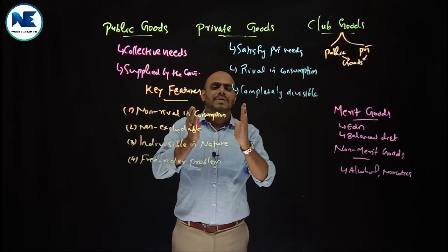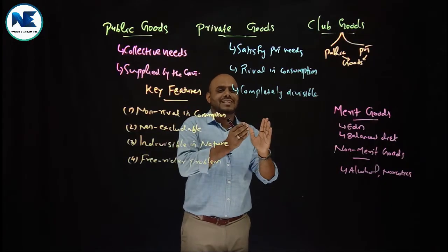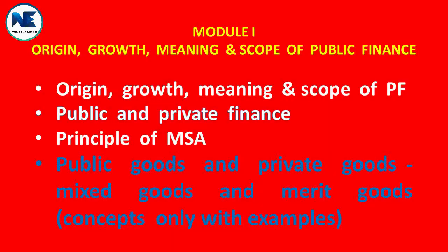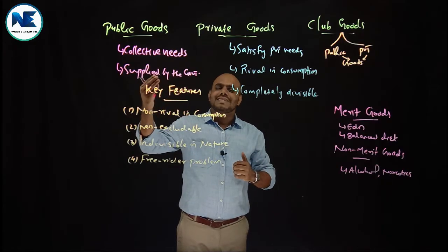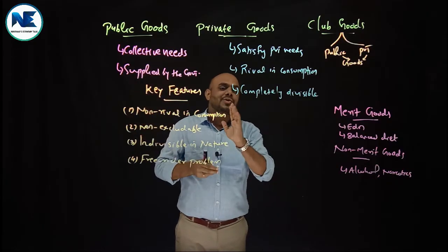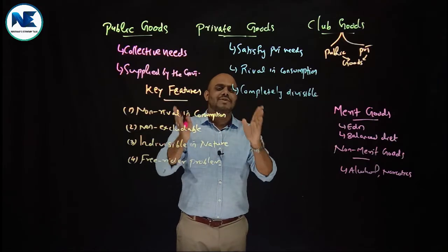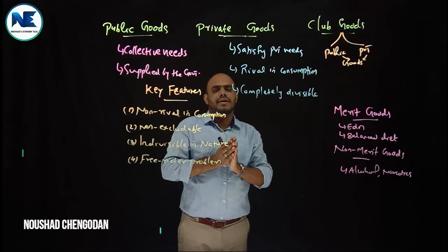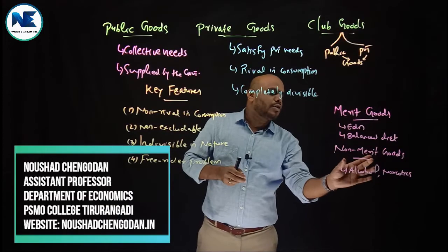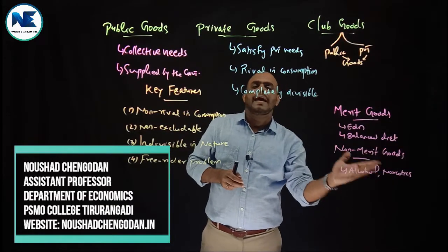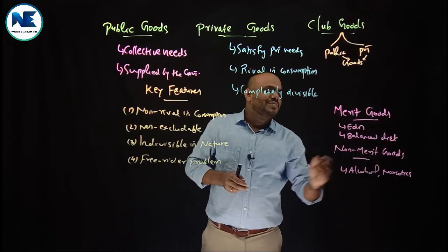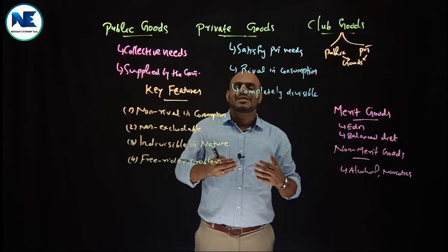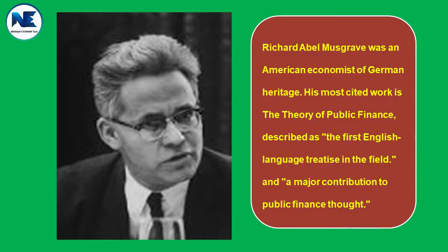We have specific concepts only; detailed discussions are expected. For 1-5 marks, each individual concept carries one to two marks. These are very easy and simple topics. A related item is Non-Merit Goods, actually discussed by Professor Musgrave.